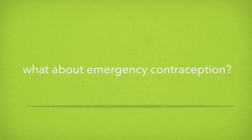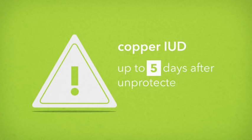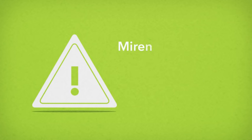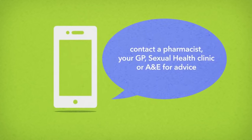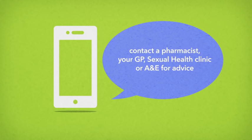What about emergency contraception? The copper IUD can be used as emergency contraception. This means that it can be fitted to stop you from becoming pregnant, up to five days after unprotected sex. The Mirena cannot be used for emergency contraception. Please contact a pharmacist, your GP, local sexual health clinic or A&E department if you have had unprotected sex and need advice.